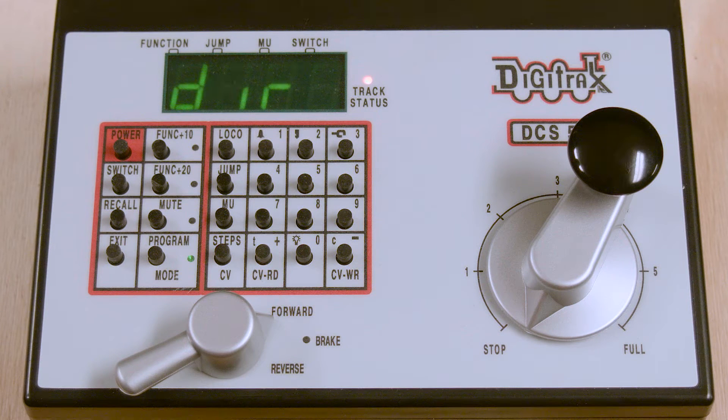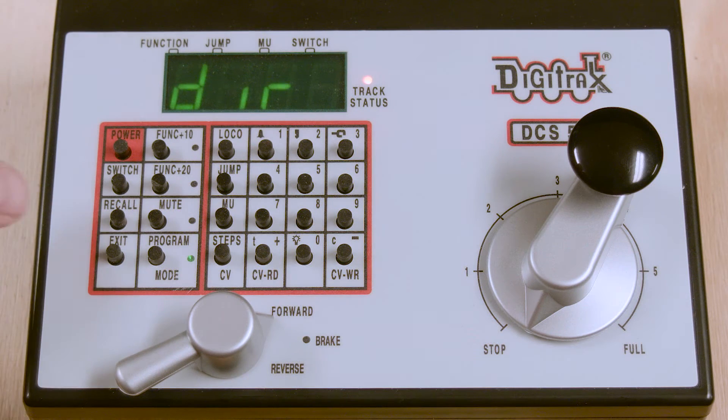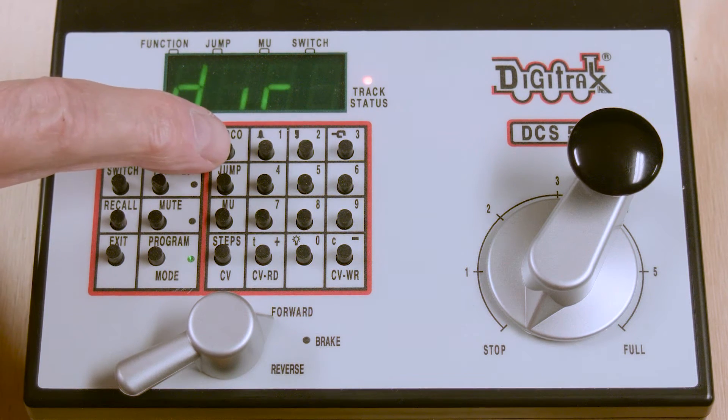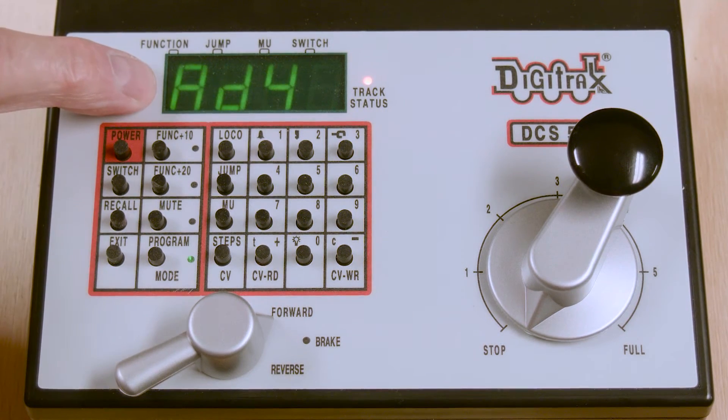Now to change the address from the address of 03 that is currently on this locomotive, which is a two-digit address, to 135, which is a four-digit address, we're going to press the loco key to get AD4 in the display.